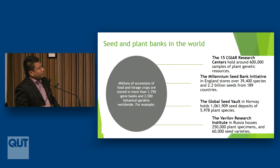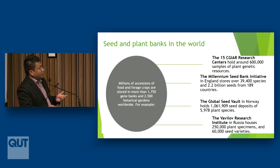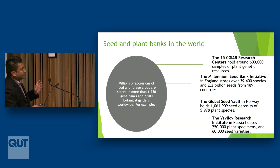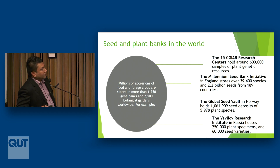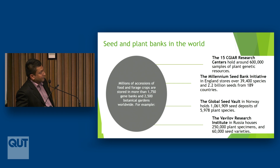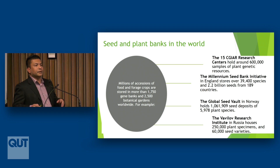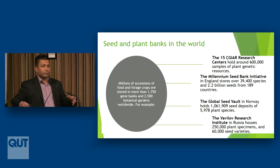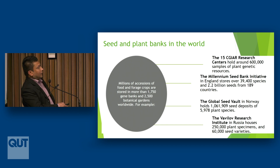Looking at the global picture, there are millions of accessions of food and forest crops stored in more than 1,700 gene banks and 2,500 botanical gardens worldwide. The 15 CGIAR research centers hold around 600,000 samples of plant genetic resources. There is also the Millennium Seed Bank Partnership in England, the Global Seed Vault in Norway, the Vavilov Research Institute, and many others in the United States, Japan, and developing countries.